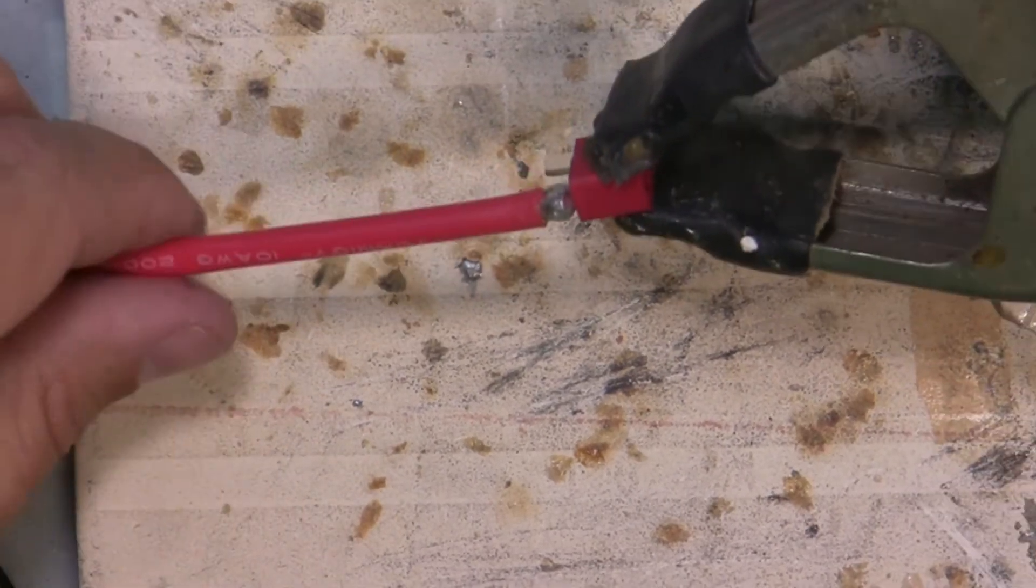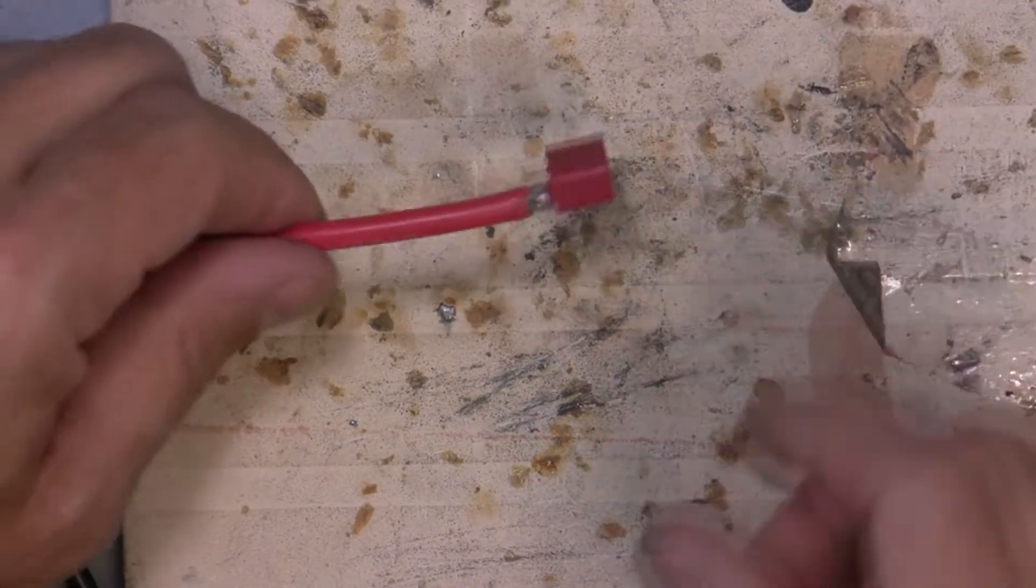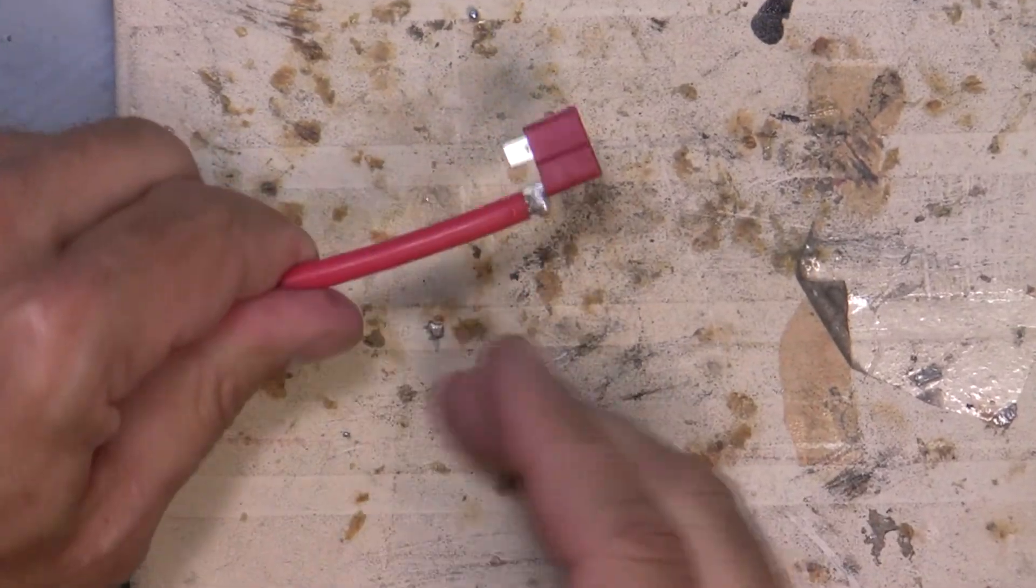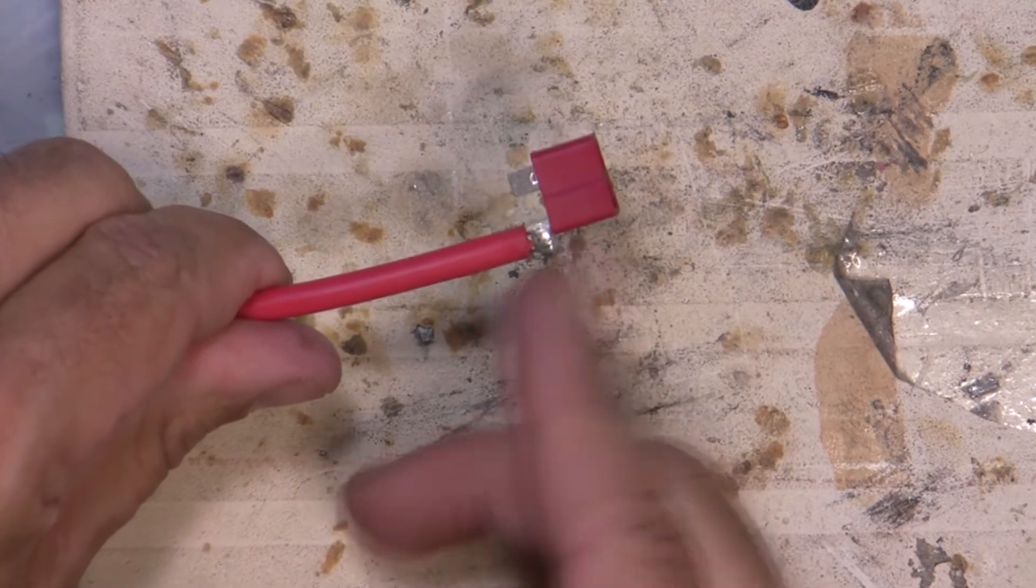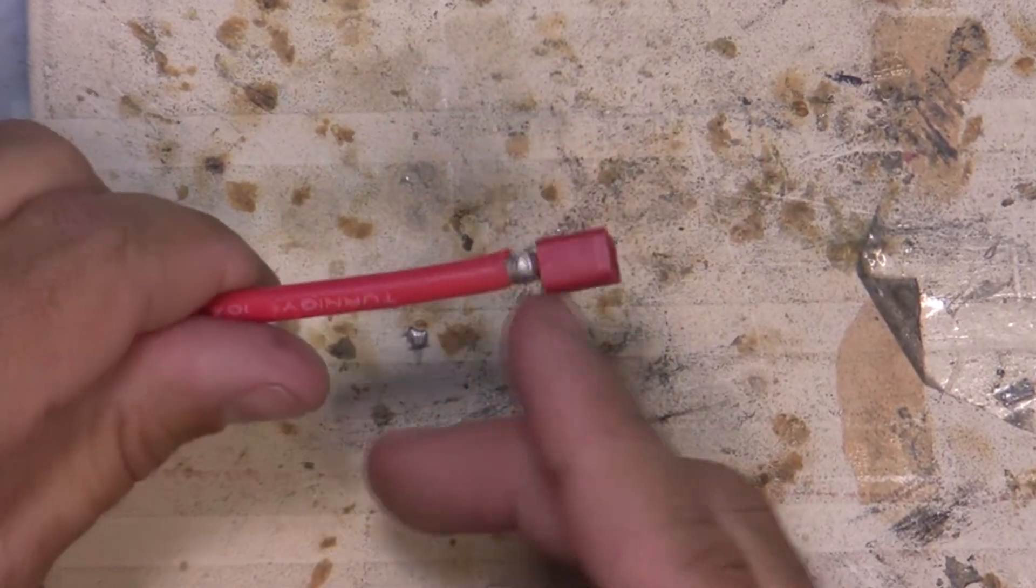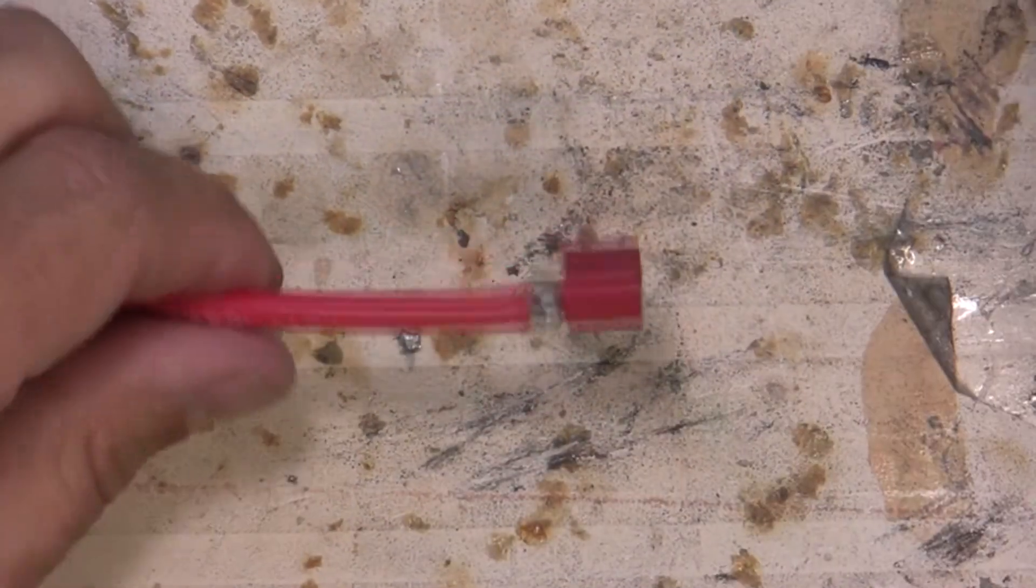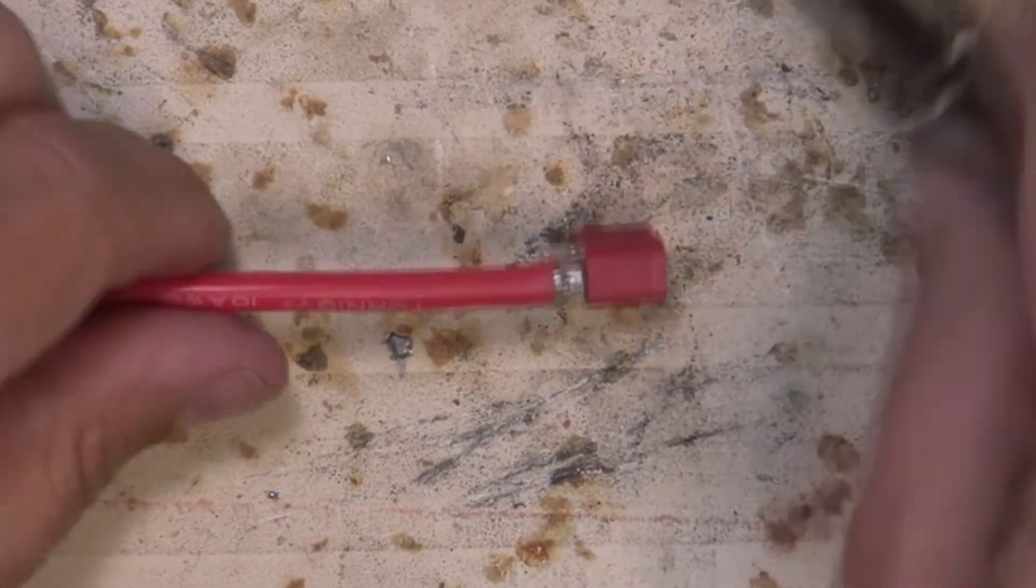Before I start working on the negative, I'm going to put the shrink tubing down. But before I do that, you can see that this side of the wire is kind of sticking up a little bit here. And I don't like it to be sticking up right there. I'm going to trim that down a little bit. So I'm going to use an X-Acto blade and trim it down a little bit.